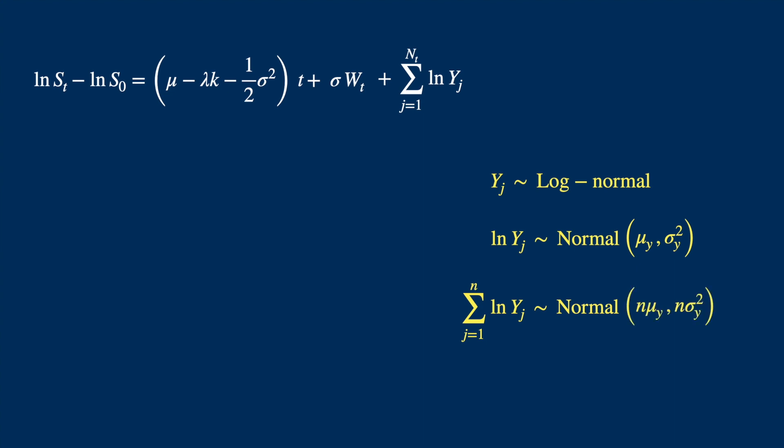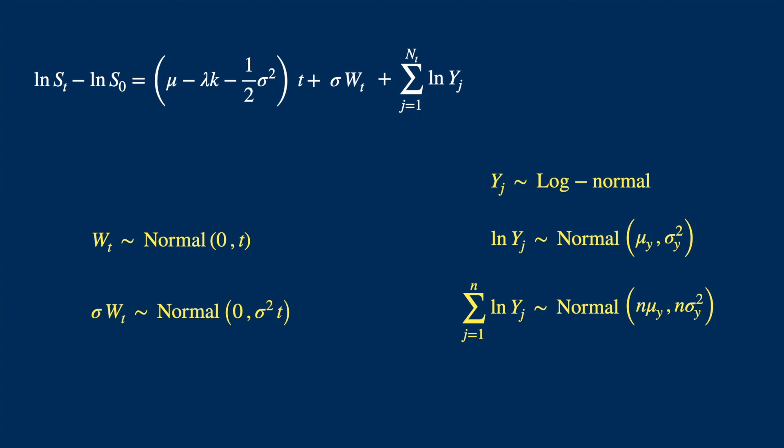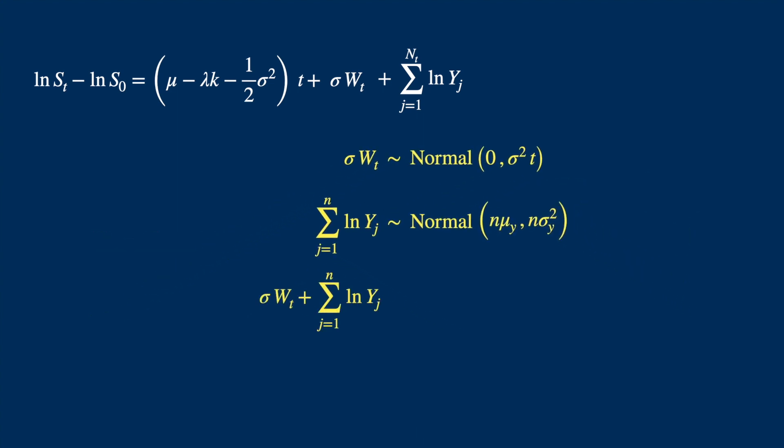Now the second random component, Wt, is also normally distributed, but with mean 0 and variance equal to sigma squared times t. We can add the two components. Again the sum of independent normals is normal. We add the means and variances because these variables are assumed to be independent.